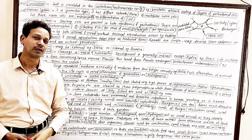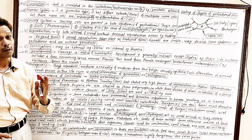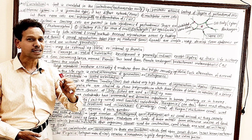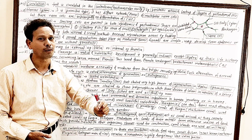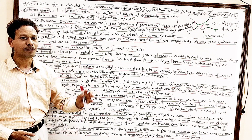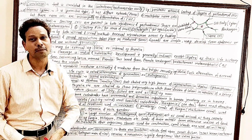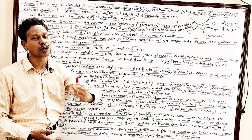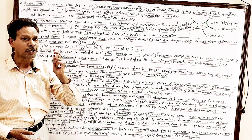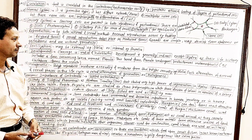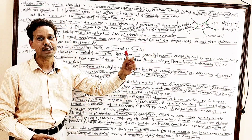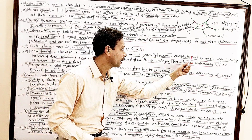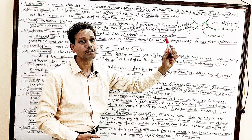Development is very important for all competitive students. Development is indirect, except in some forms like Hydra. Otherwise, in all cnidarians a larval stage appears. A free-swimming larva — very important, note this point — a free-swimming larva called the planula larva is present.